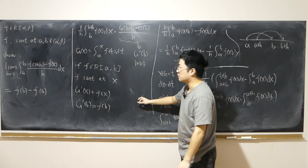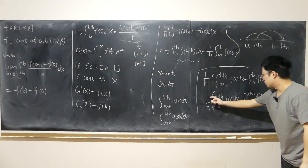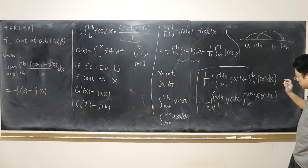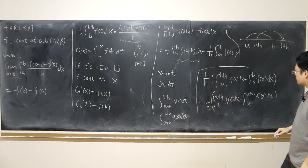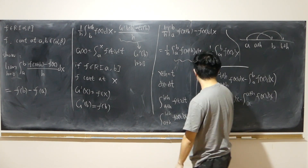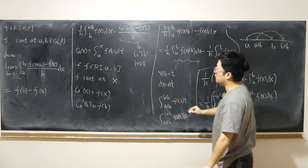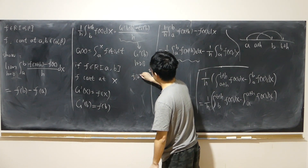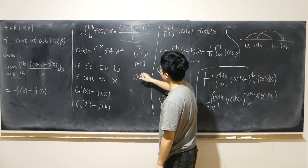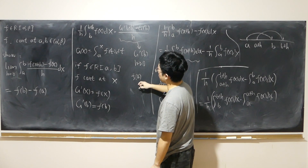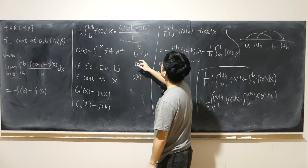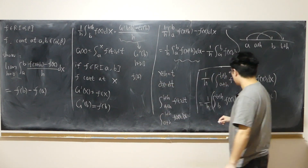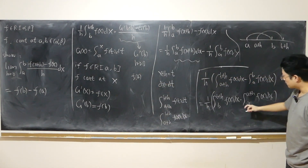For the same reason, distributing 1/h onto the integral from a to a+h of f(x) dx, as h approaches zero that part approaches f(a). So in the end we have f(b) minus f(a).